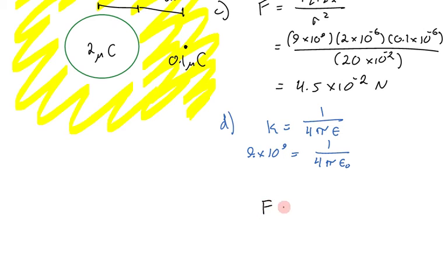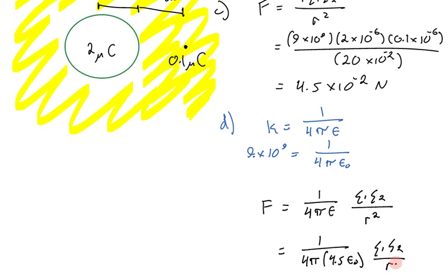So what we want to calculate is the force with the permittivity not of free space, but of the concrete. So there's Coulomb's law without the simplification. We have this constant instead of k. We know that epsilon is 4.5 times epsilon naught, so I'll write this as 1 on 4 pi times 4.5 epsilon naught times q1, q2 on r squared.